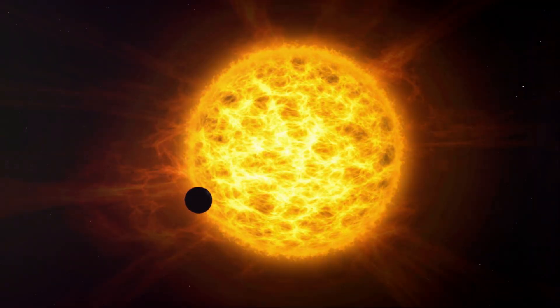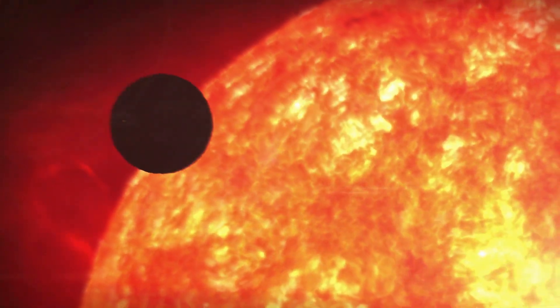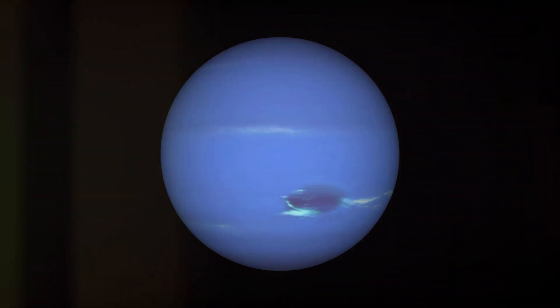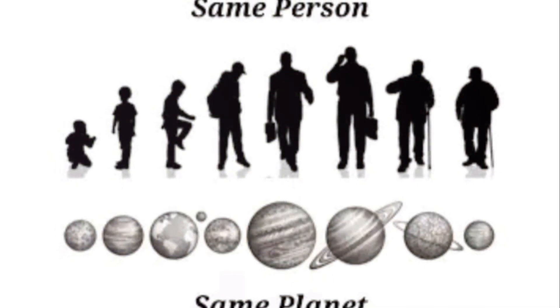Picture this. Mercury, the closest planet to the sun, is Earth in its infancy, still raw and unformed. As we move further out, each planet represents a different phase in Earth's life, culminating with Neptune, the furthest planet, symbolizing the wise grandfather version of Earth.